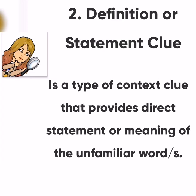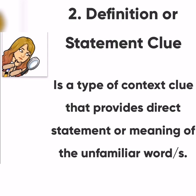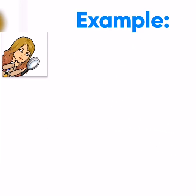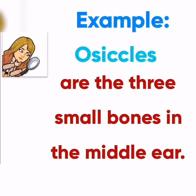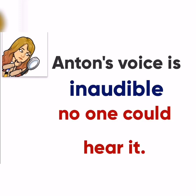Another type is the definition or statement clue. It is a type of context clue that provides the direct statement or meaning of the unfamiliar word. For example, 'ossicles are the three small bones in the middle ear.' Ossicles is the difficult term, and 'the three small bones in the middle ear' is its definition. Another example: 'Anton's voice is inaudible. No one could hear it.' The word 'inaudible' is the difficult term, and 'no one could hear it' is its meaning.